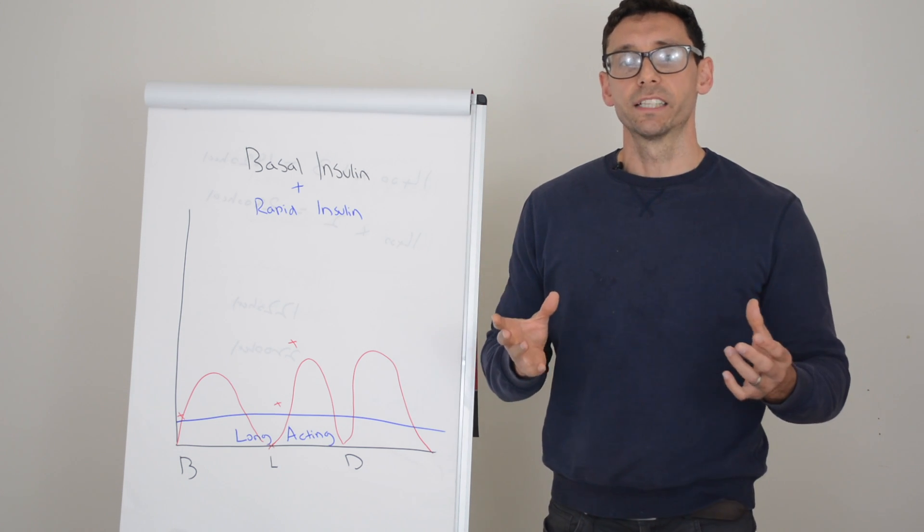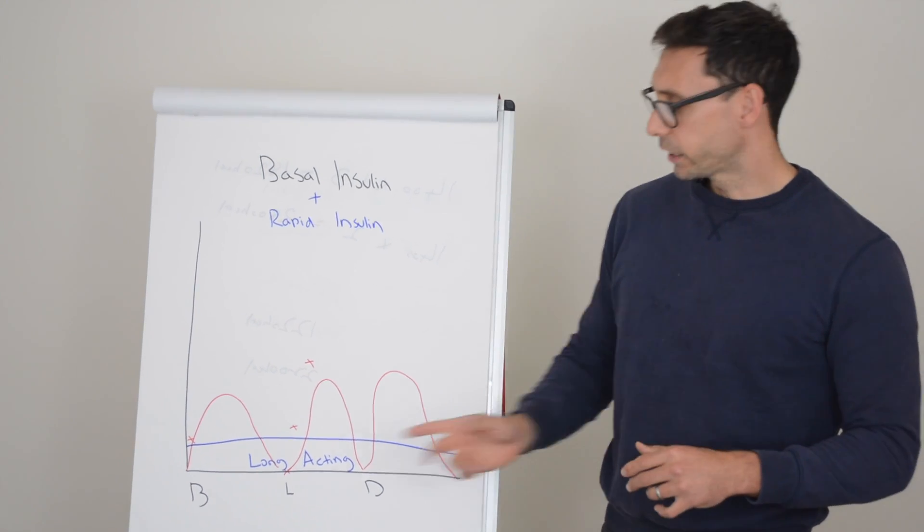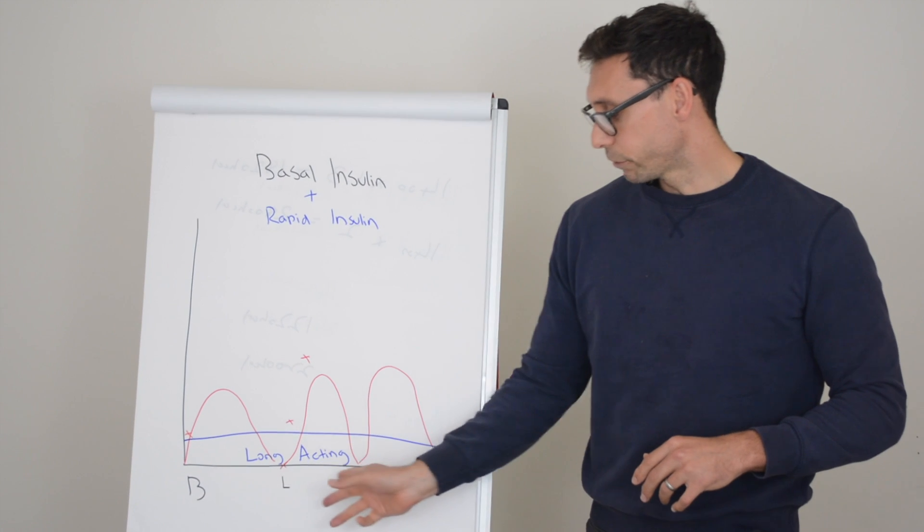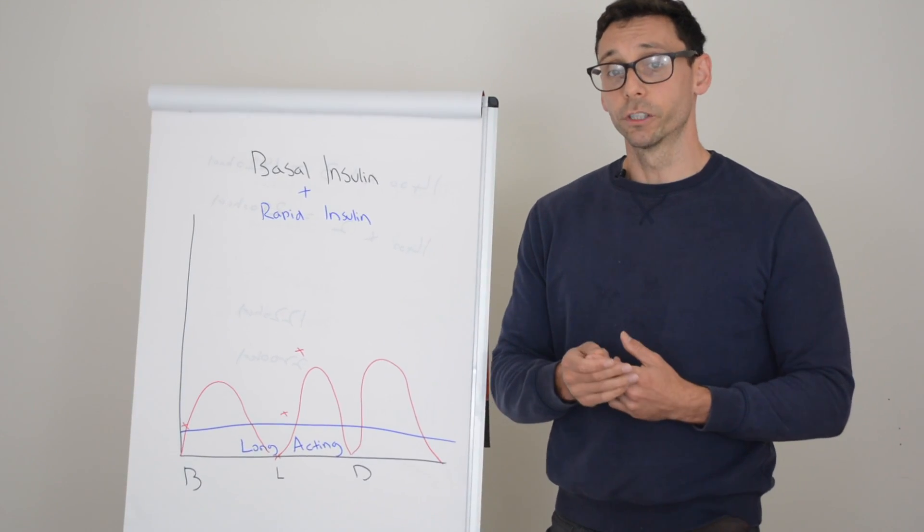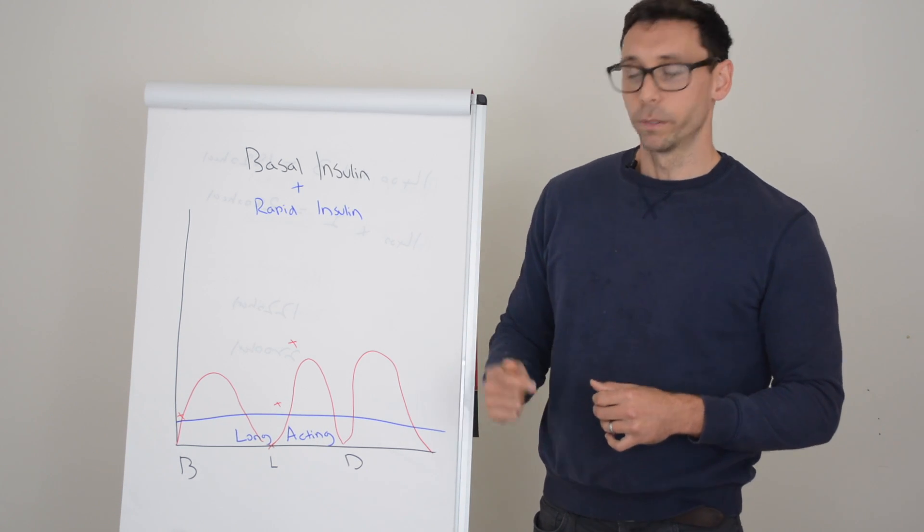We never recommend taking insulin blindly, so you'll need to be testing your glucose levels quite frequently. Particularly if you're taking an insulin dose, we suggest that you test your blood glucose levels every four and a half hours to assess how that dose has turned out.